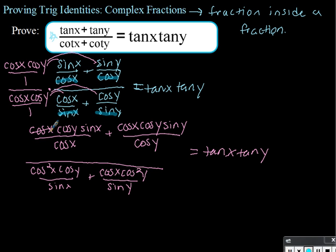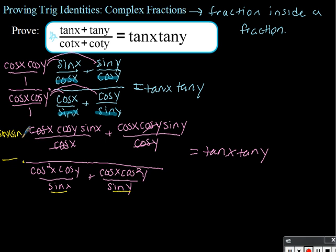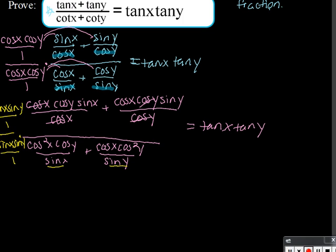Now we go through and cancel what we can. The cosine of x's cancel, and the cosine of y's cancel in the numerator terms. We still can't simplify the denominator yet, so instead of rewriting everything, we're going to multiply in by something else — sine of x times sine of y over 1 in both the numerator and denominator — to cancel the sine of x and sine of y terms remaining in the denominator.